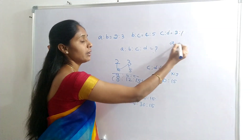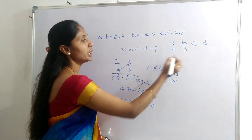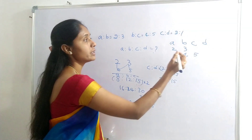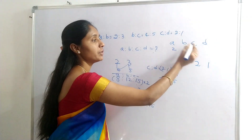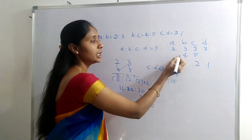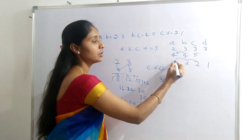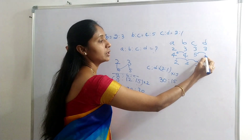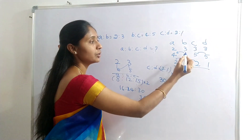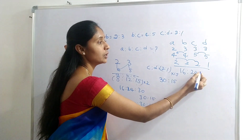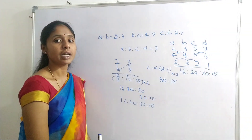In another method, write A, B, C, D. A:B = 2:3, B:C = 4:5, C:D = 2:1. Shift 3 to the empty place, shift 4 to the next, and shift 5. Multiply through: 4×2 = 8, 8×2 = 16; 4×3 = 12, 12×2 = 24; 5×3 = 15, 15×2 = 30; 5×3 = 15. Both ways give the same answer.